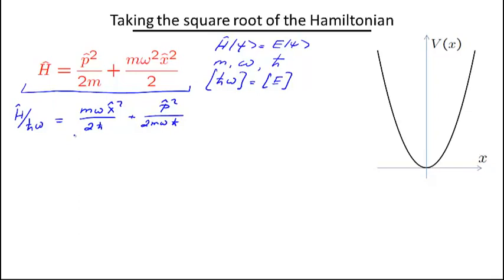And the next step I'm going to use is also going to be pretty strange from any point of view. So I'm going to just write the first term as the square root of mω over 2ℏ times x squared, plus the second term likewise is going to be p over √(2mωℏ) squared.